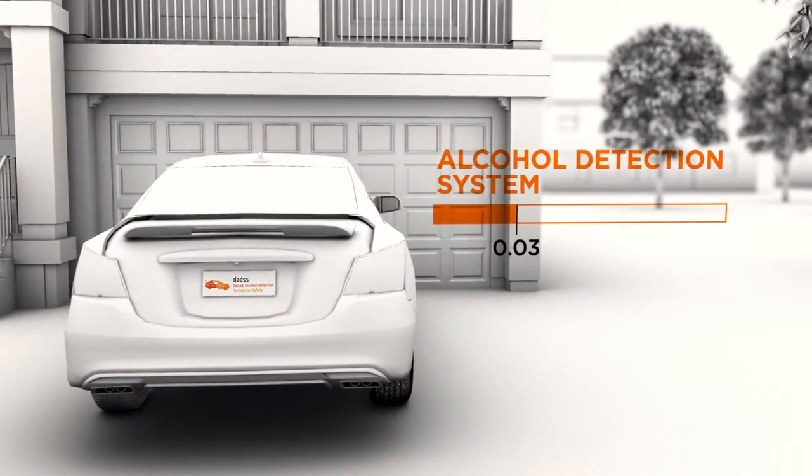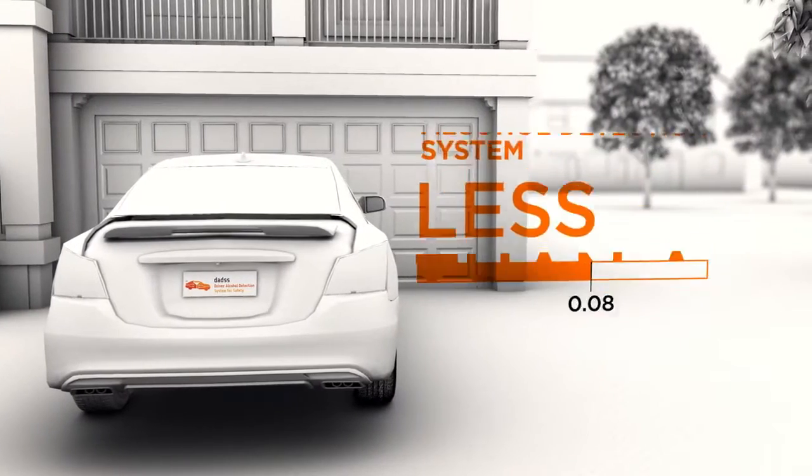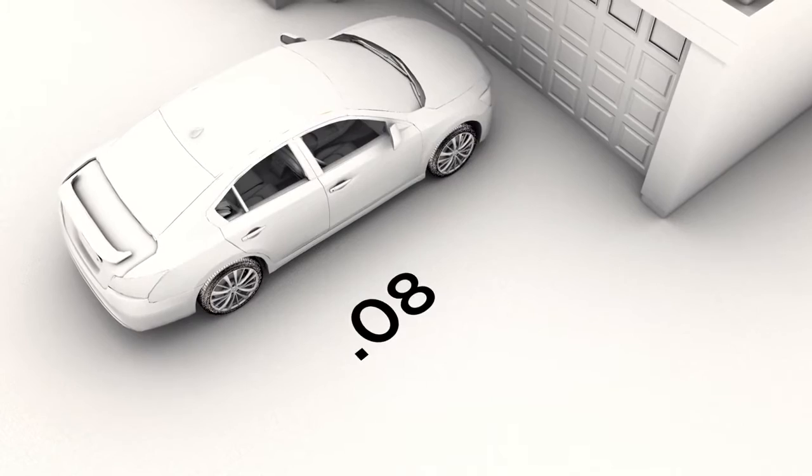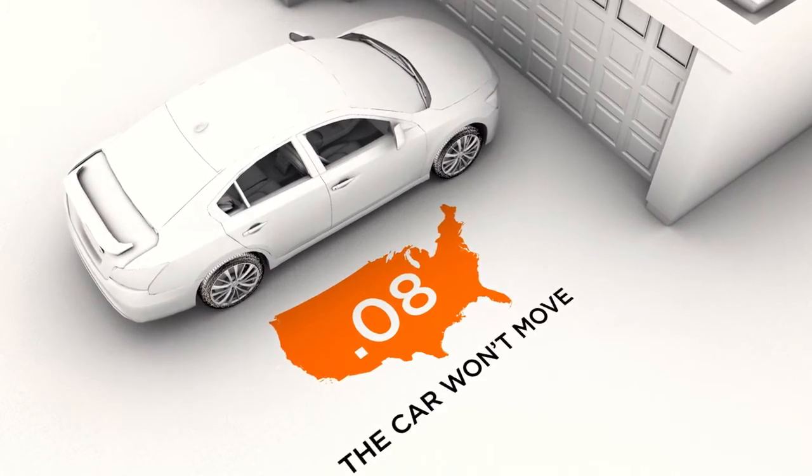The alcohol detection system will measure the alcohol in a driver's blood in less than a second. If it is above .08, the legal limit in all 50 states, the vehicle won't move.